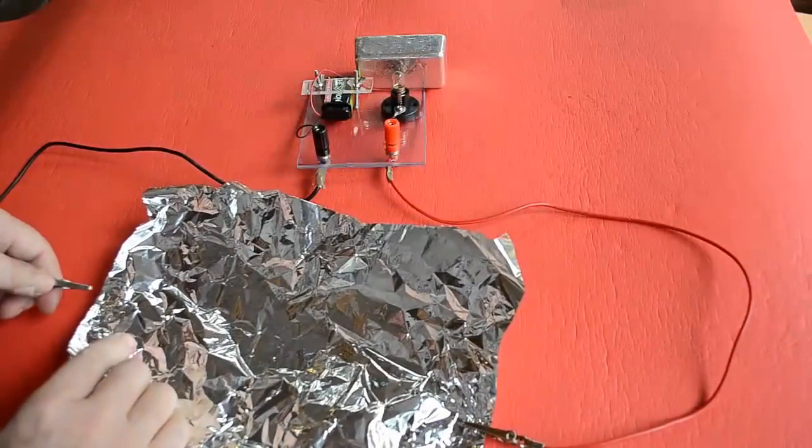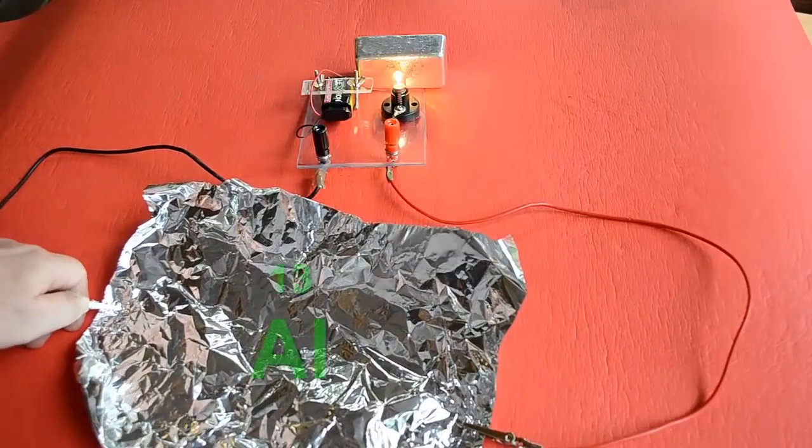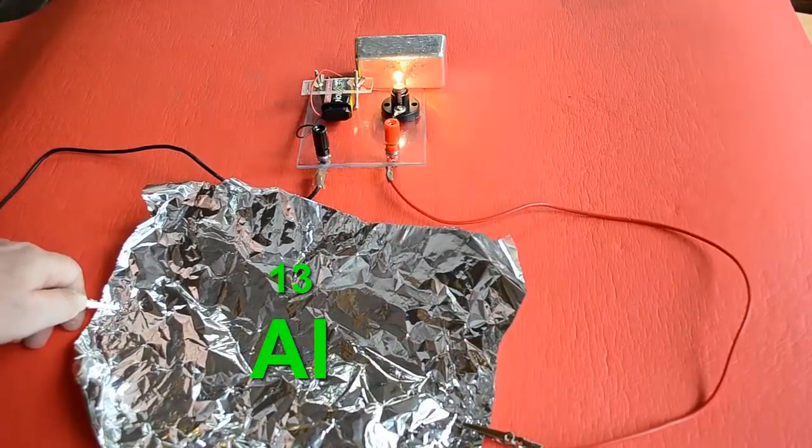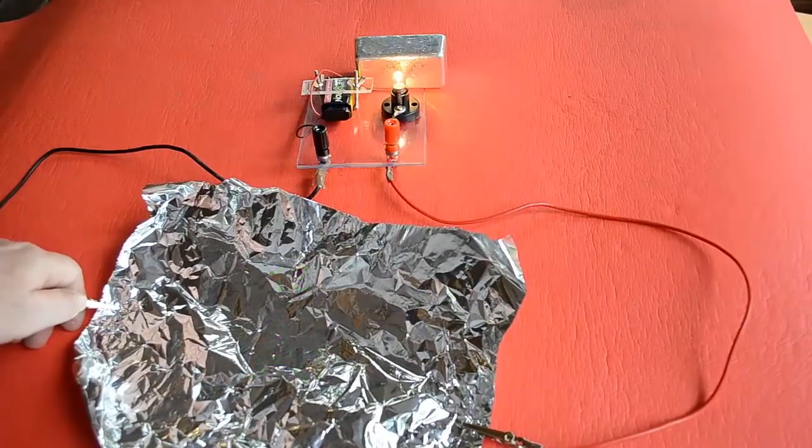Here you can see that aluminum has three metallic properties. It's already been flattened into a thin sheet. It's shiny. And it conducts electricity.